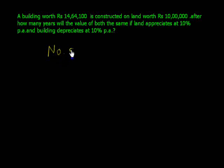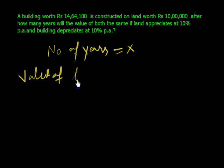Suppose number of years is equal to x. Now after x years, value of land - we will apply the amount formula on this principle: principal times (1 plus r divided by 100) power time. Our principal of land is 10 lakh, 1 plus r is 10%, and time is x.